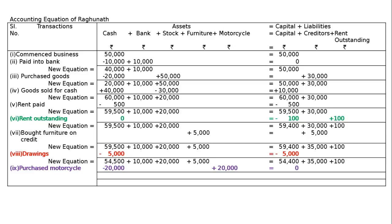The new final equation shows: cash Rs. 34,500, bank Rs. 10,000, stock Rs. 20,000, furniture Rs. 5,000, motorcycle Rs. 20,000, capital Rs. 54,400, creditors Rs. 35,000, and rent outstanding Rs. 100.